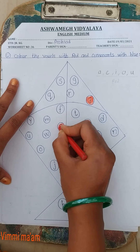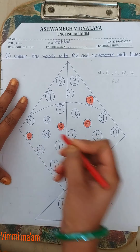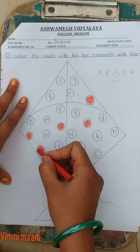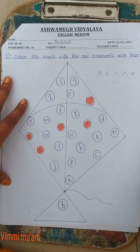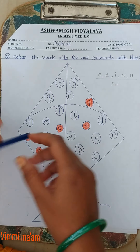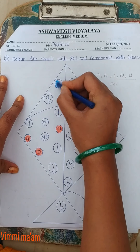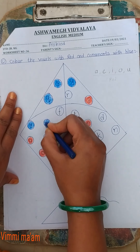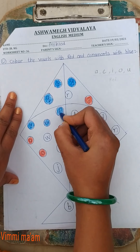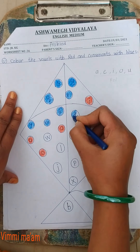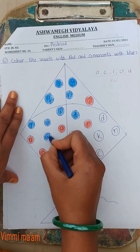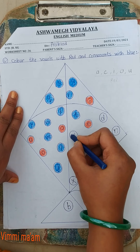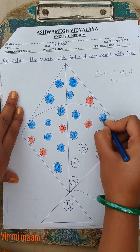Then A, then U, then O. Okay, yeh sab kya hai? A, E, I, O, U — yeh kya hai? Vowels. Yeh baqi ke sab hai consonants. To yeh sab consonants hai, usmei hume kunsa color karna hai? Blue. Yeh sab baqi ke jitne bhi consonants hai, usmei hume karna hai blue color. So we fill blue color.